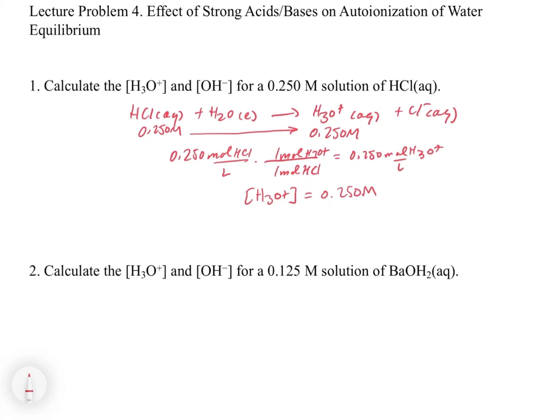And so if we want to get the concentration of OH-, we have to use our Kw expression. So we have that 1 times 10 to the minus 14 is equal to our concentration of H3O+, which is 0.250 molar, times our concentration of OH-, which we don't know. And if we solve for the concentration of OH-, this is going to give us a concentration of 4 times 10 to the minus 14.